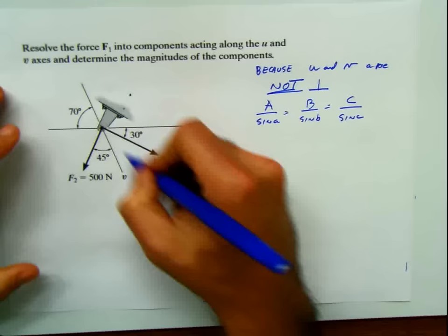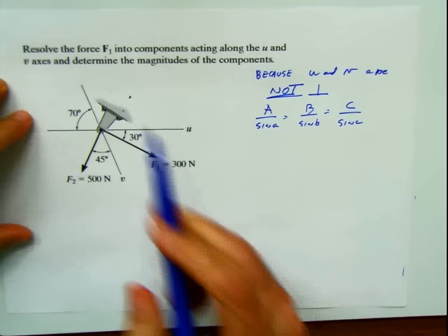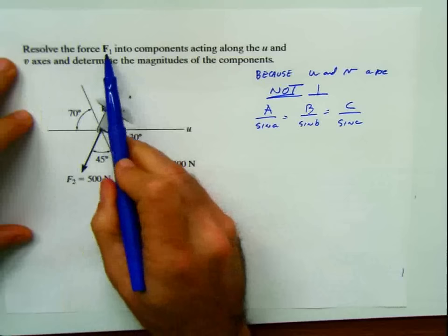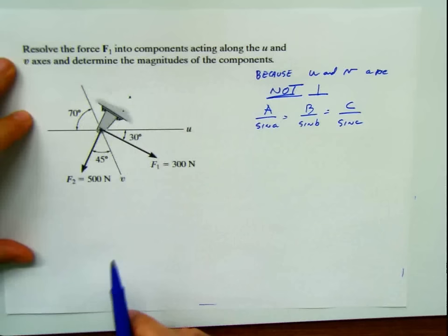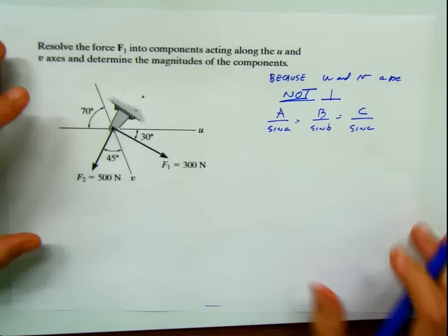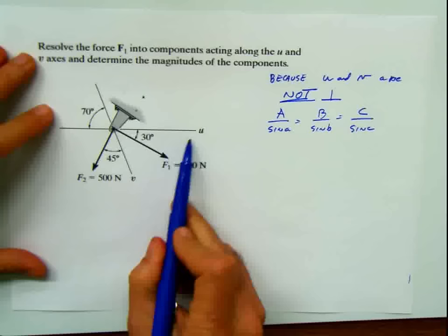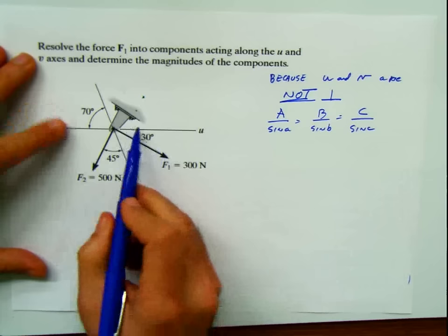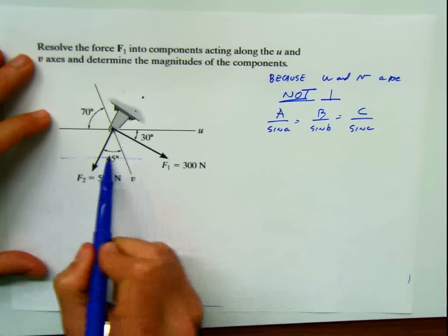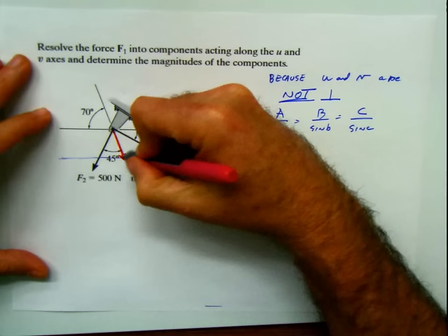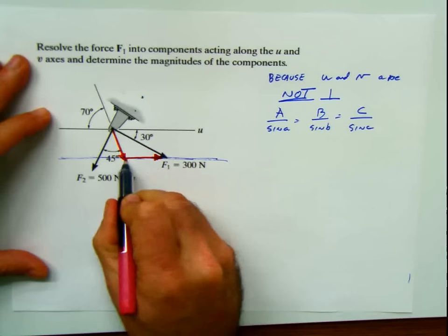The problem asks us to resolve — not project — the force F1 into components acting along the u and v axes. To find the components of F1 with respect to these two axes, I draw a line parallel to the u-axis and a line parallel to the v-axis through the tip of F1. My components are going to be F1u along the u direction and F1v along the v direction.